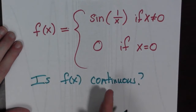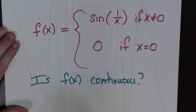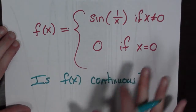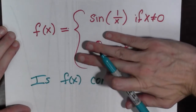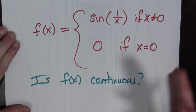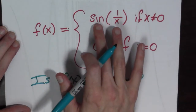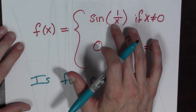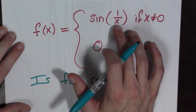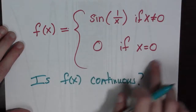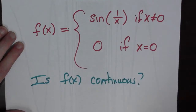Well, if we ask this question, we really should be talking about on its domain or on a specific point. It's clearly continuous when x is not equal to 0, because sine is continuous everywhere and 1 over x is continuous when x is not equal to 0. The composition of continuous functions is continuous. So the only problem is when x equals 0.